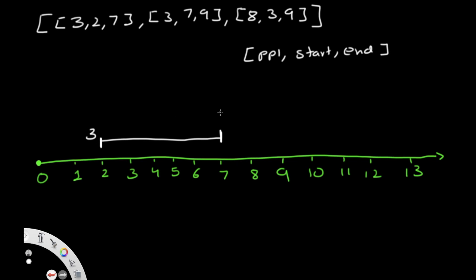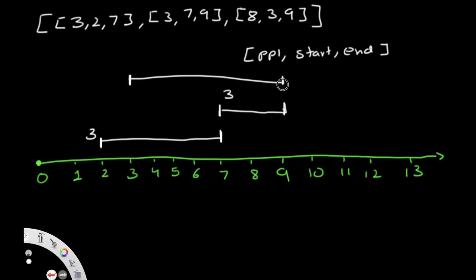We have one more trip starting at kilometer 7, going up to kilometer 9 — again three people. And another trip starting at kilometer 3, going all the way up to kilometer 9, with eight people. The question we want to ask is: can we accommodate all of these people inside our car? Let's go through it step by step.